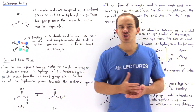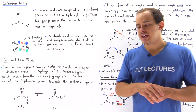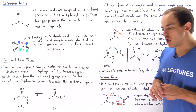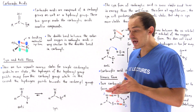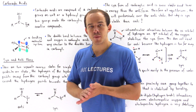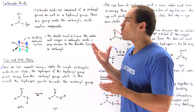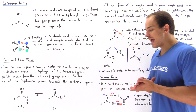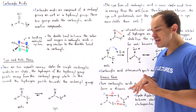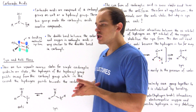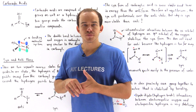In the next 30 or so lectures, we're going to begin our discussion on a new type of group in organic chemistry that we haven't yet spoken about, known as carboxylic acids. Let's begin by discussing the structure of carboxylic acids.